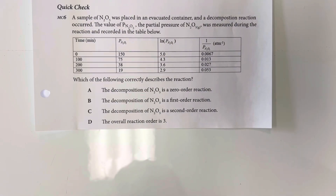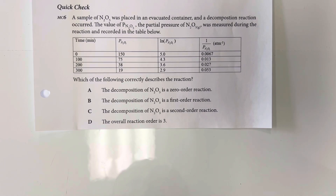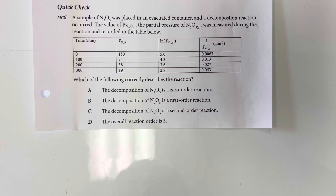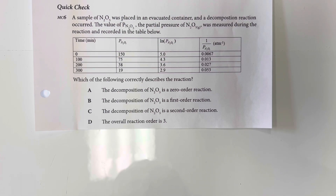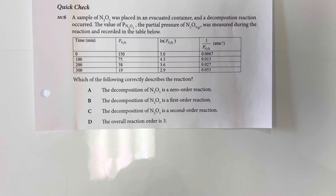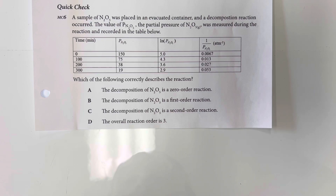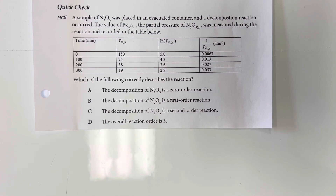A sample of dinitrogen pentoxide was placed in an evacuated container and a decomposition reaction occurred. The partial pressure of dinitrogen monoxide was measured during the reaction and recorded in the table below. Which of the following correctly describes the reaction?